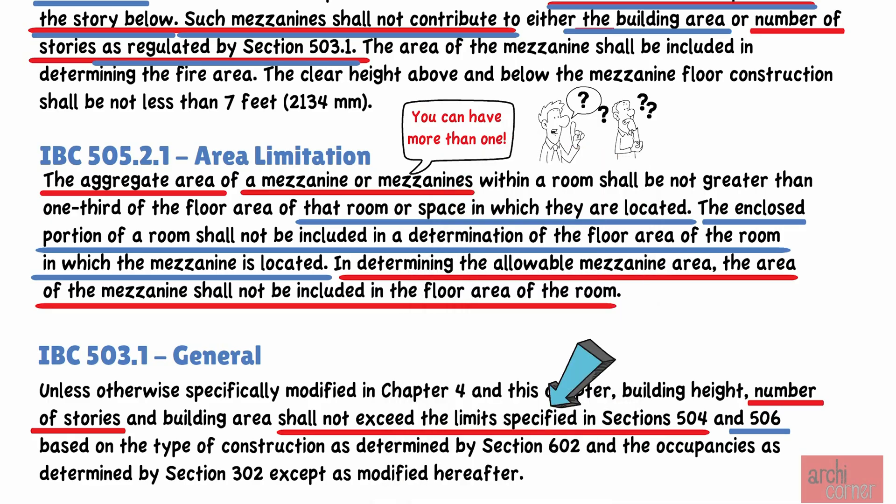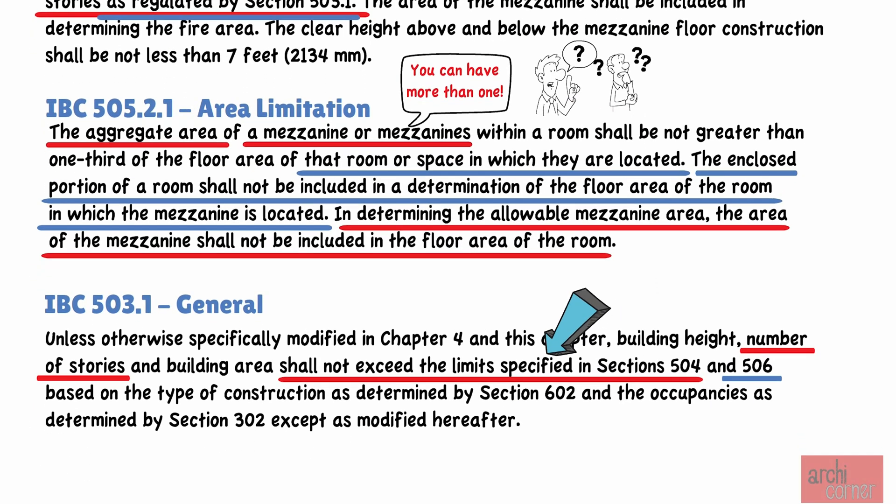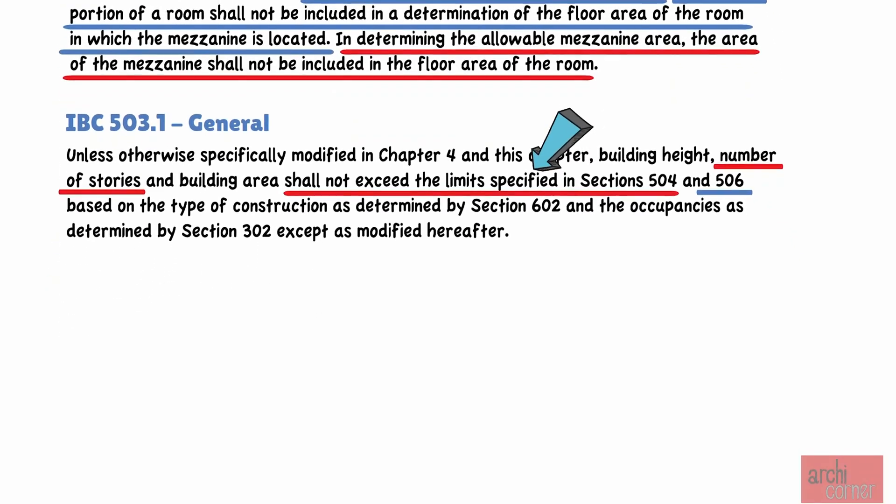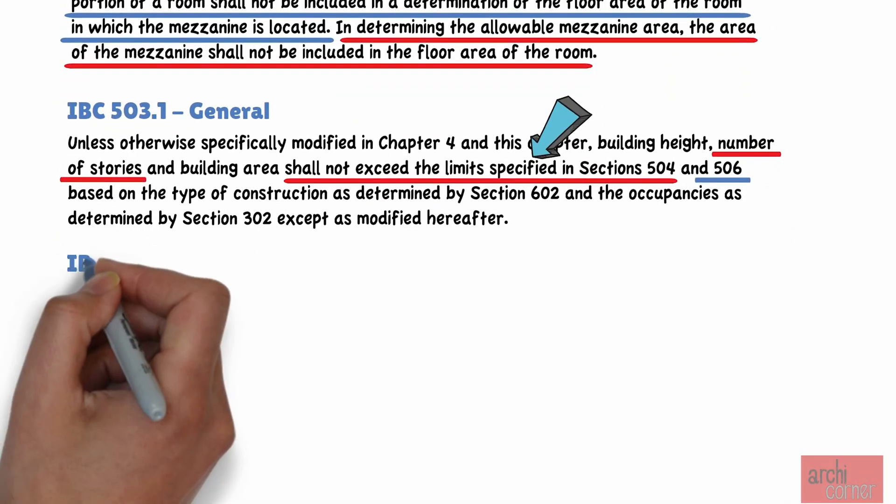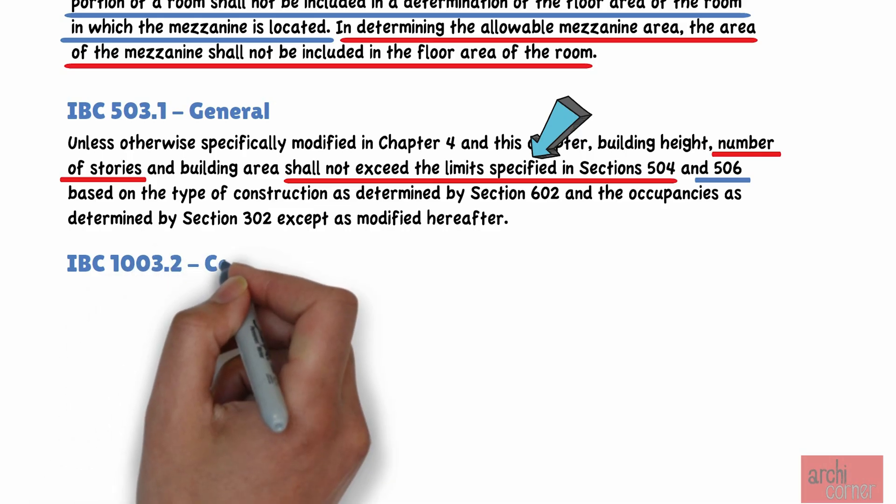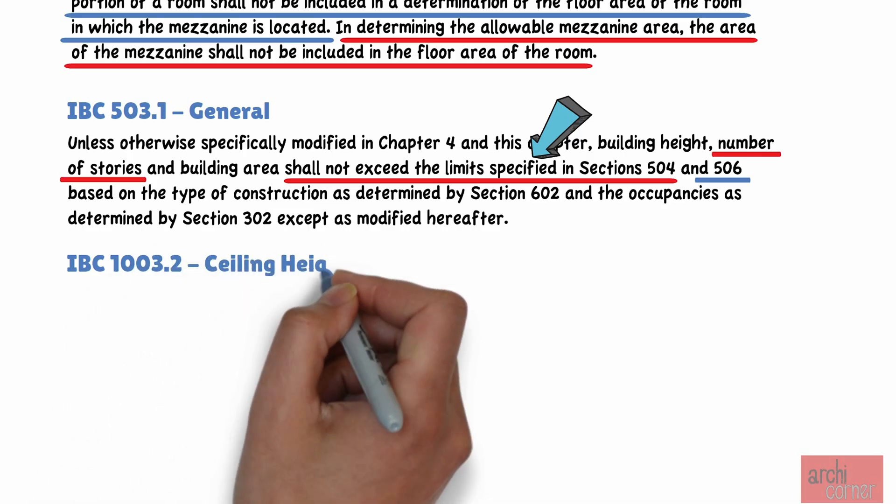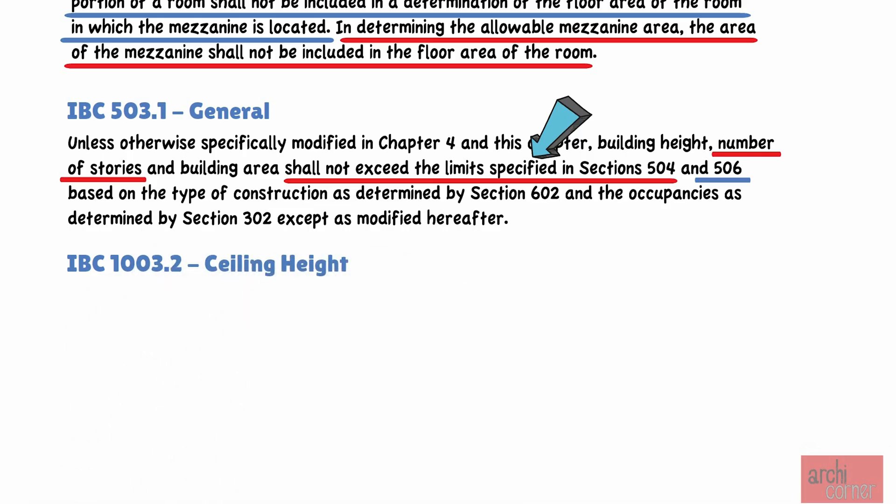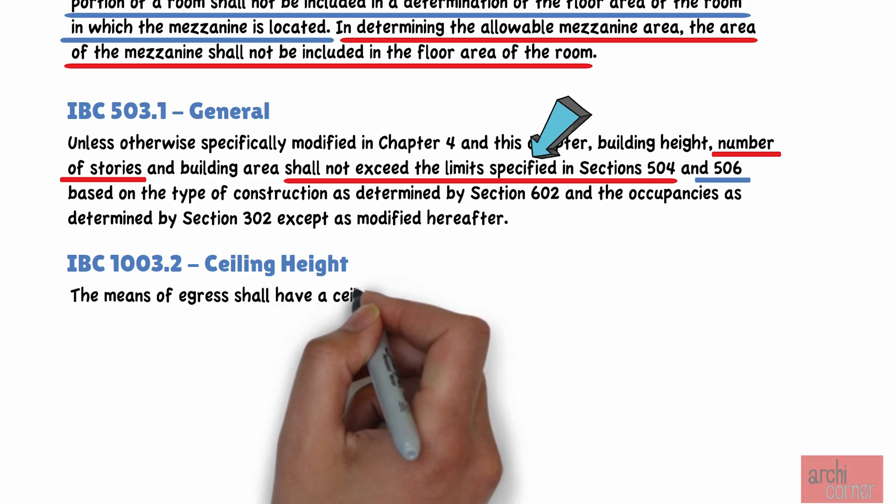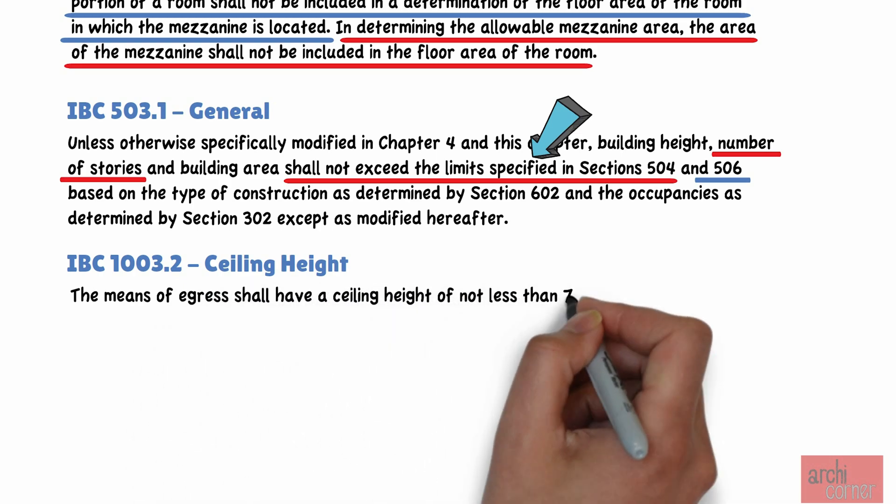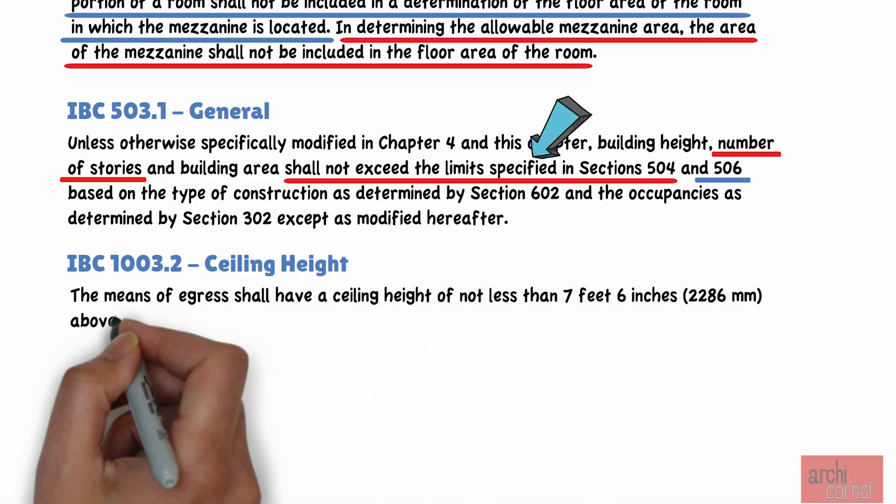Now that we discussed how this affects the number of stories and the allowed building area, let's talk about other items that a mezzanine is required to comply with. Let's talk about the required ceiling height. Ceiling heights are referenced in a couple of places.